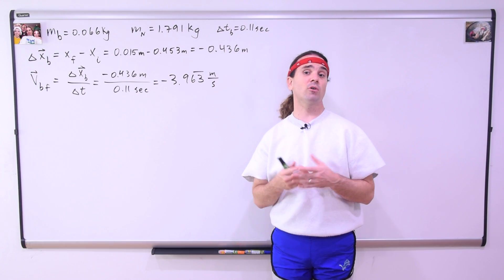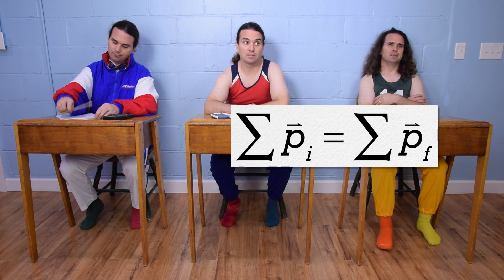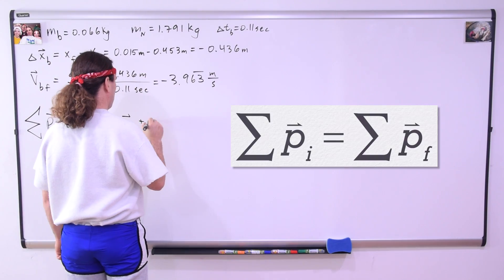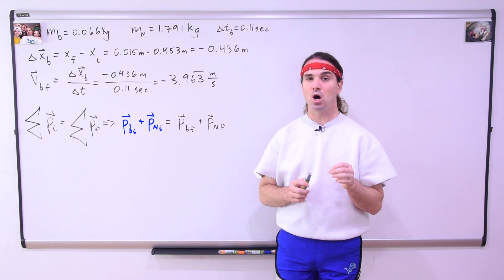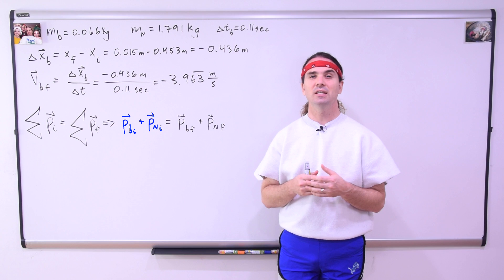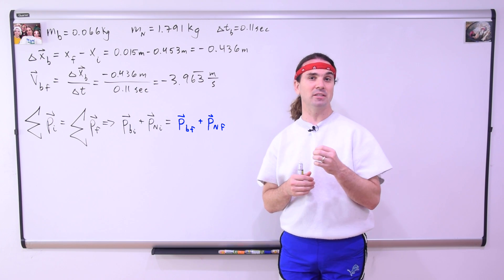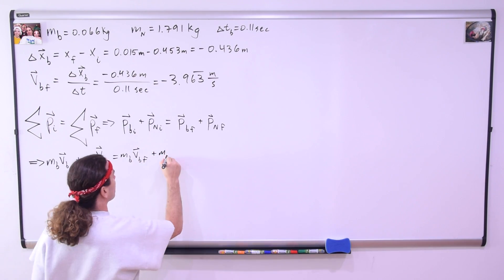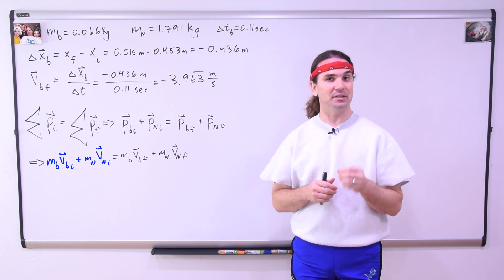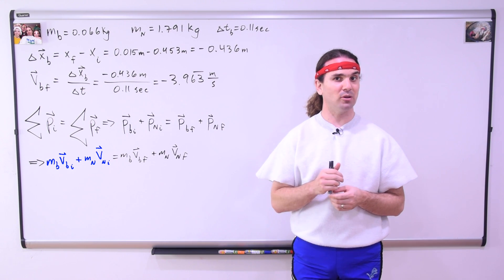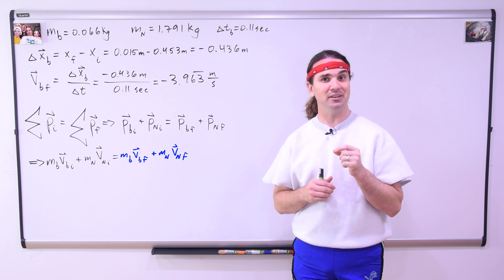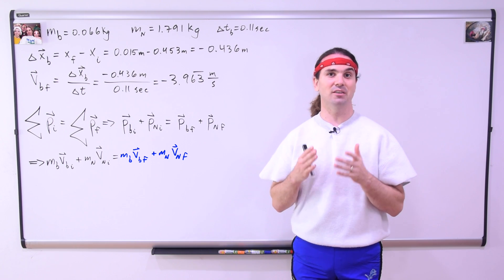Bobby, what is the equation for conservation of momentum? Conservation of momentum. The sum of the initial momenta equals the sum of the final momenta. This means the momentum of the ball initial plus the momentum of the Nerdapult initial is equal to the momentum of the ball final plus the momentum of the Nerdapult final. And because momentum equals mass times velocity, we know the mass of the ball times the velocity of the ball initial plus the mass of the Nerdapult times the velocity of the Nerdapult initial is equal to the mass of the ball times the velocity of the ball final plus the mass of the Nerdapult times the velocity of the Nerdapult final.